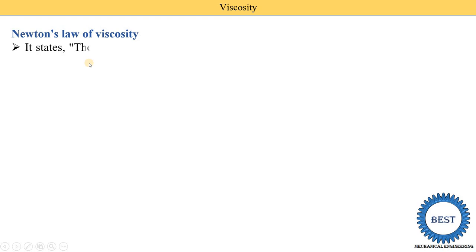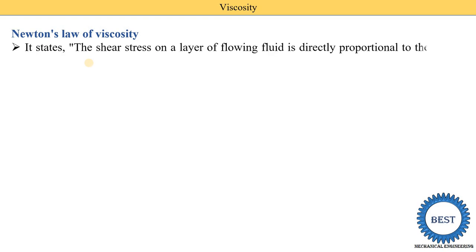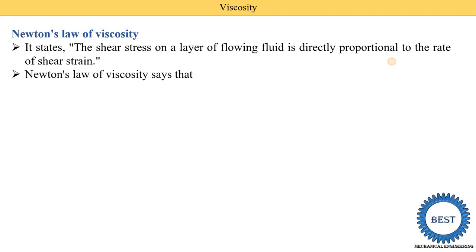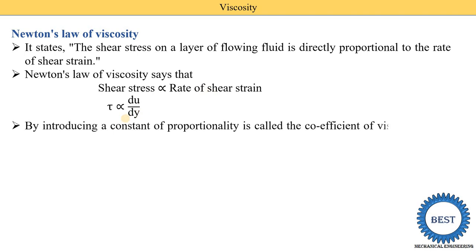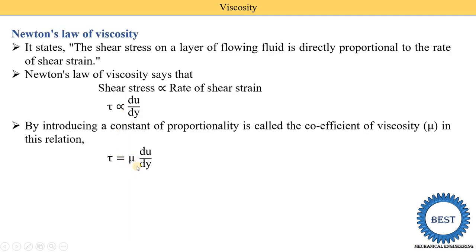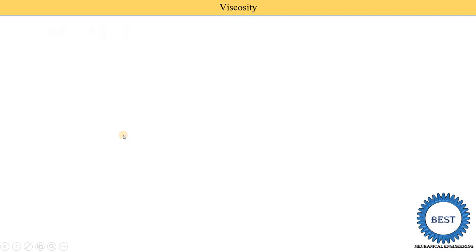Newton's law of viscosity states that the shear stress on a layer of flowing fluid is directly proportional to the rate of shear strain. So shear stress tau is proportional to du/dy. By introducing the constant of proportionality mu — the coefficient of viscosity — we convert the proportionality to equality. This equation is called Newton's law of viscosity.